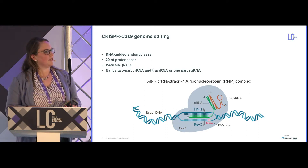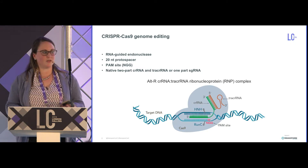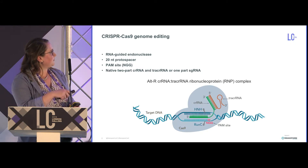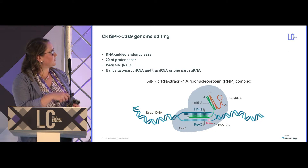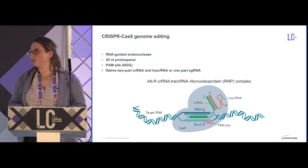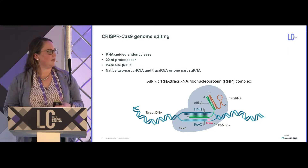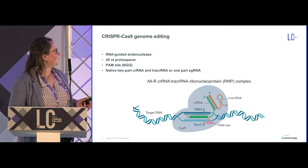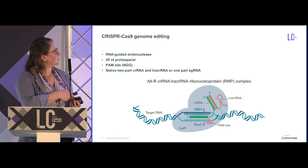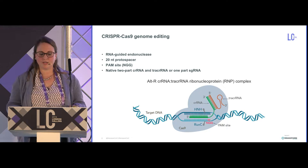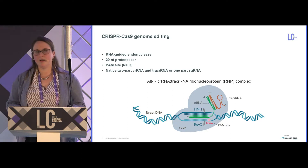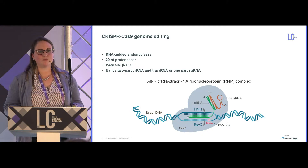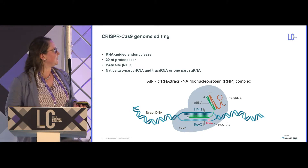You can deliver the RNAs as either a two-part system with a crRNA that's target-specific along with a universal tracrRNA, or you can merge these two into a single-guide RNA — a one-molecule system delivered with the Cas9 nuclease as a ribonucleoprotein complex.